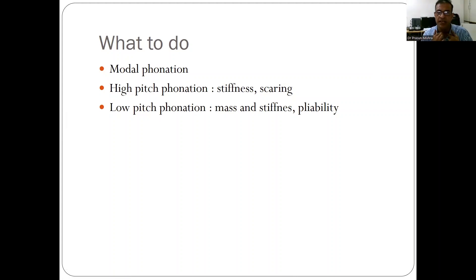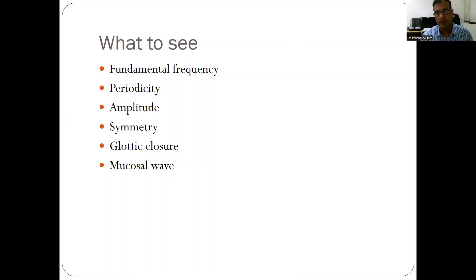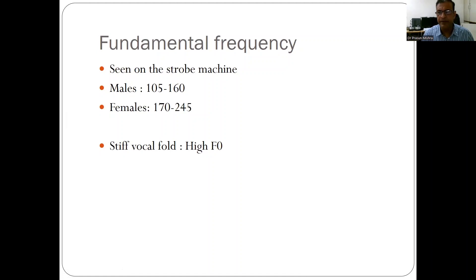When performing stroboscopy, we do not simply put the stroboscope and tell the patient to phonate. We need to assess it in modal phonation, high pitch phonation, and low pitch phonation. The five key parameters to analyze are: fundamental frequency, periodicity, amplitude, symmetry, glottic closure, and mucosal wave. Commonly, people only comment on mucosal wave and closure, but periodicity, amplitude, and symmetry must also be reported.